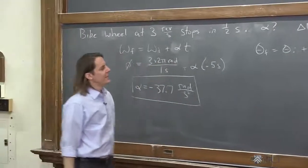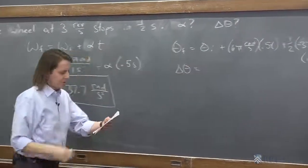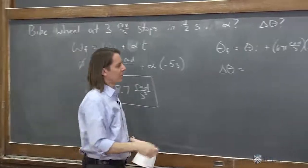So you do all that, and you get that theta final minus theta initial is the number I got. You can check me, is 4.7 radians.